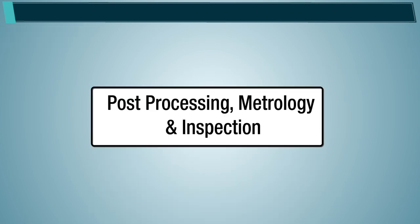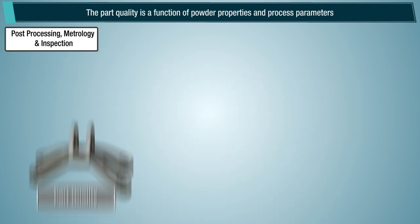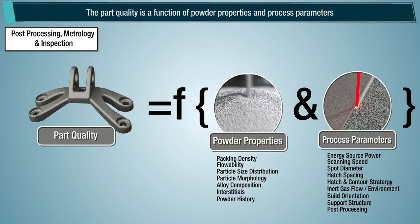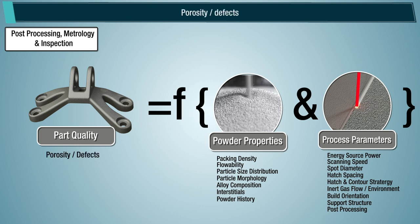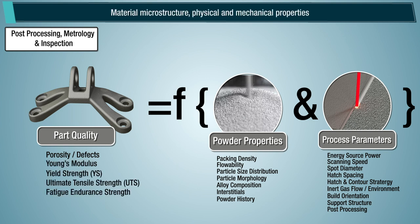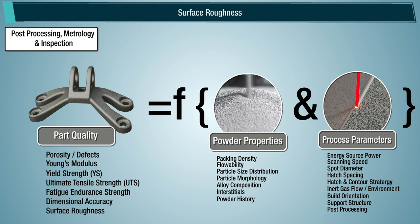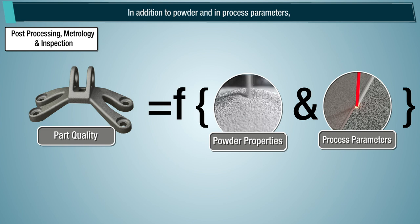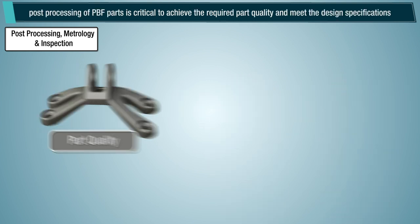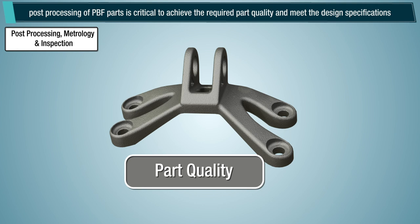Post-processing, metrology, and inspection. The part quality is a function of powder properties and process parameters. The quality of the powder bed fusion part is assessed in terms of porosity and defects, residual stresses and distortion, material microstructure, physical and mechanical properties, dimensional accuracy and tolerances, and surface roughness. In addition to powder and in-process parameters, post-processing of powder bed fusion parts is critical to achieve the required part quality and meet the design specifications.